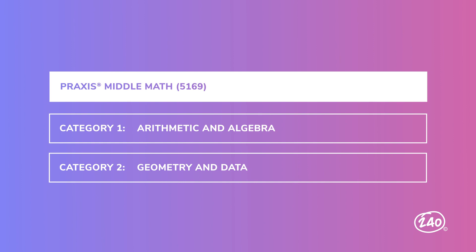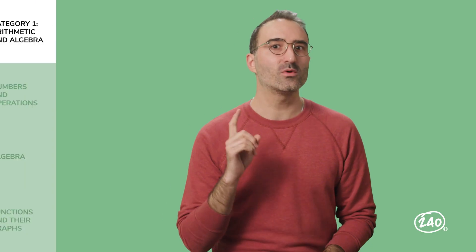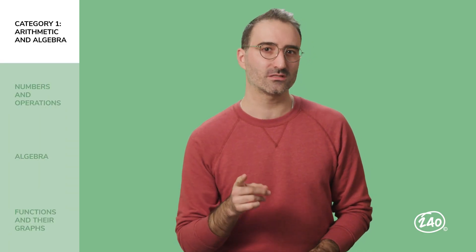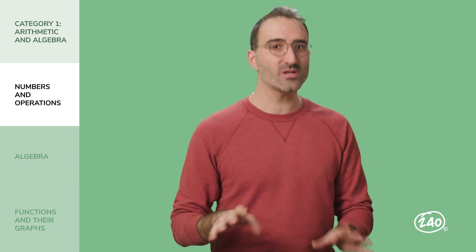The first competency that we'll look at is arithmetic and algebra. This competency will make up a whopping 62% of your exam. Now, we can break this category into three sections. Numbers and operations, this is the arithmetic part. Algebra, and yeah, this is the algebra part.